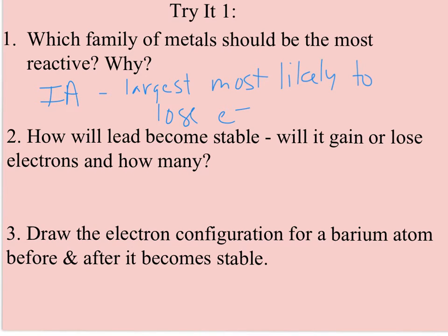My second question asks, how will lead become stable? Will it gain or lose electrons, and how many? And if you find lead, you could look at its configuration and you would see its configuration is XE, 6S2, and then this is actually a big one. It goes back to 4F14 and 5D10, and then 6P2. So we see that lead has 4 valence electrons. So is it going to tend to gain or lose? It's a metal, so it's going to tend to lose electrons. And again, because it's a fairly big atom compared to nonmetals. And it will tend to lose all four of those to become more stable and pick up the configuration of xenon.